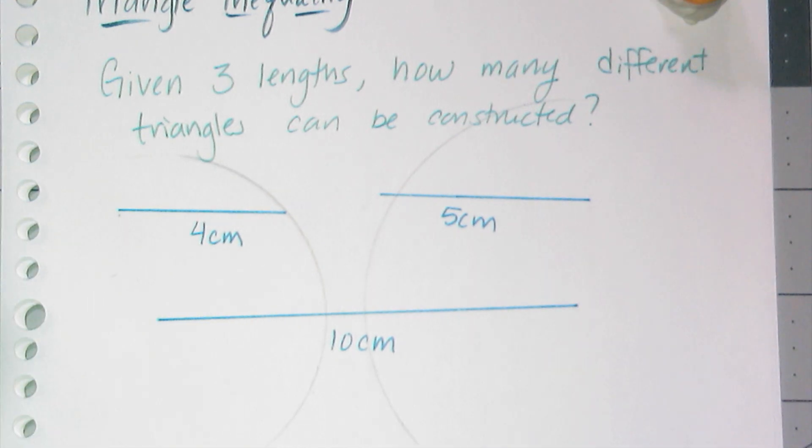And so what does that mean? Well it means that I can't just pick any three numbers to represent the sides of a triangle. There are restrictions, right?